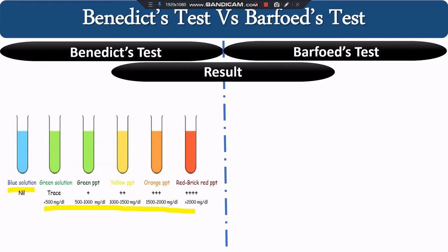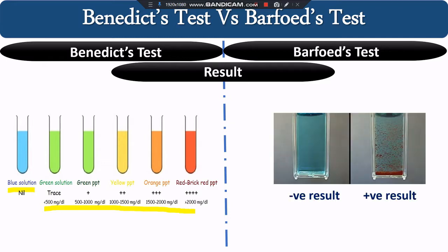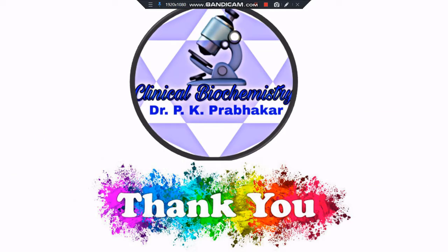In the Barfoed test, the result is binary — either positive or negative. If the blue color of copper acetate is retained, that means a negative test. If a red precipitate forms at the bottom of the test tube, that indicates a positive test. That is all from today's lecture.